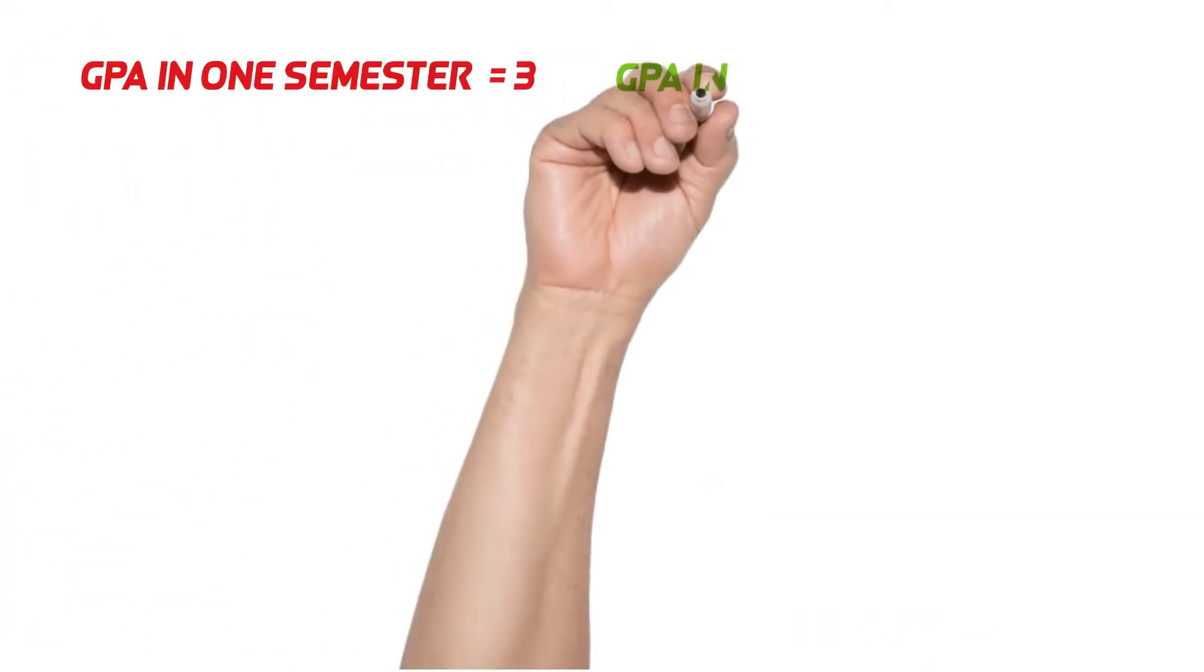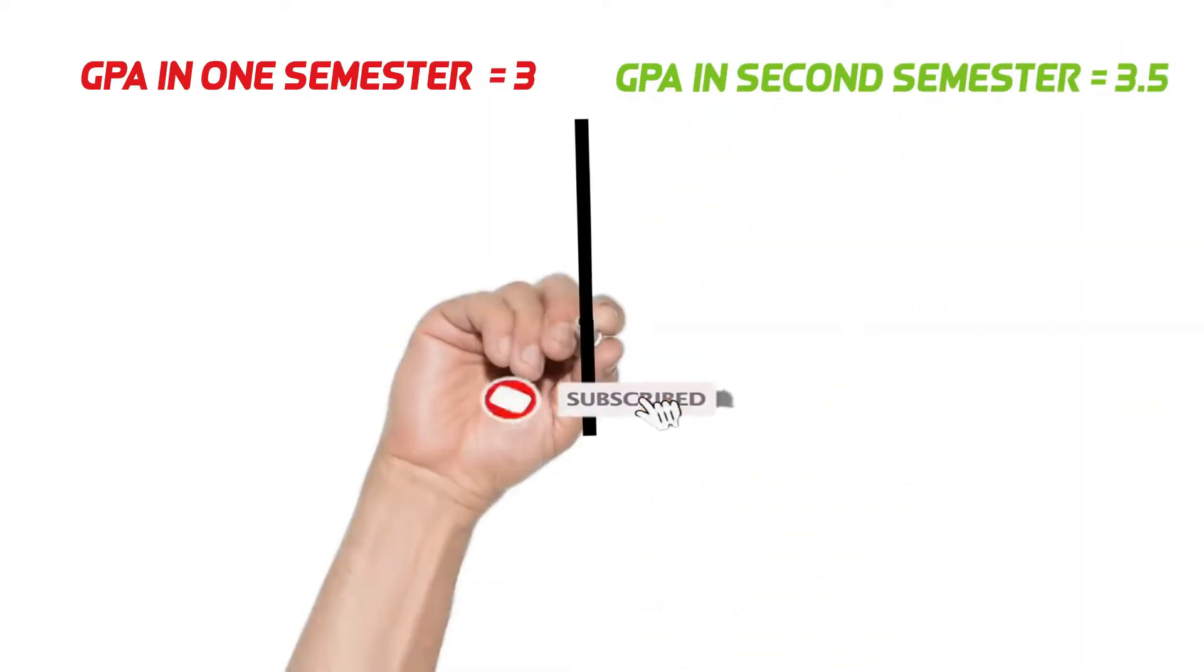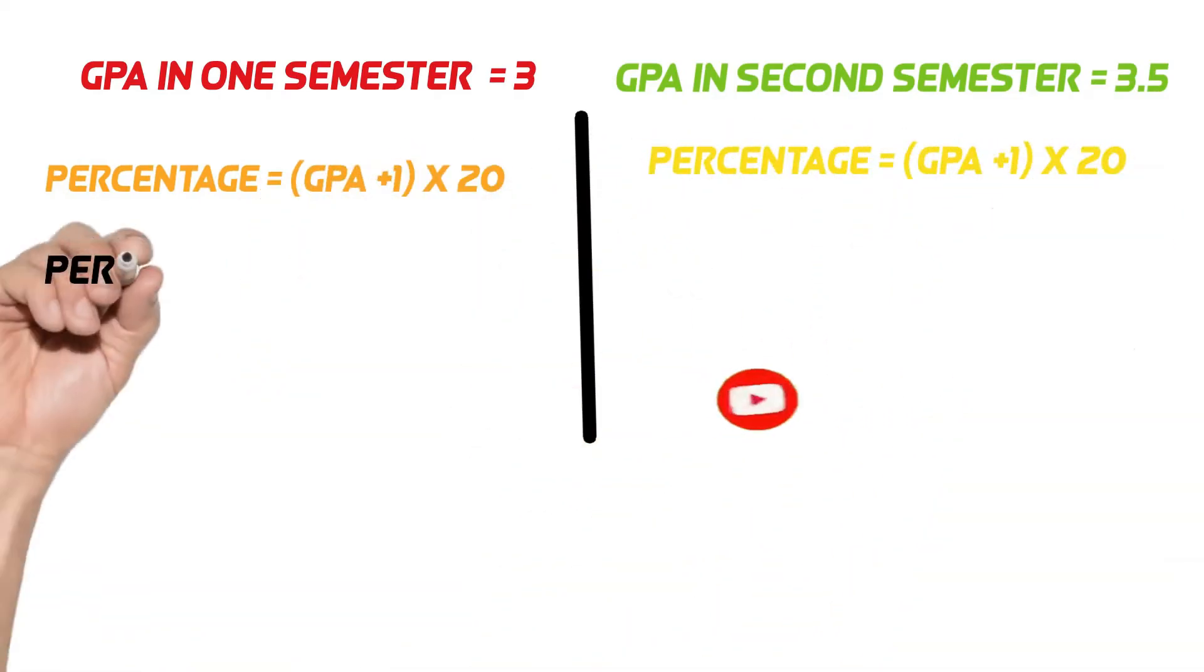Let us have a GPA in semester 1, 3 and 3.5 in the second semester. First, we find the GPA of each semester in percentage.